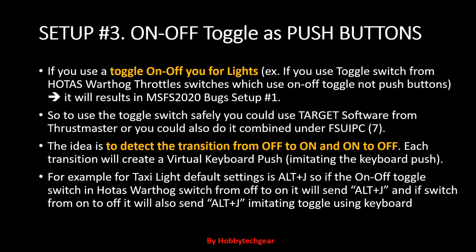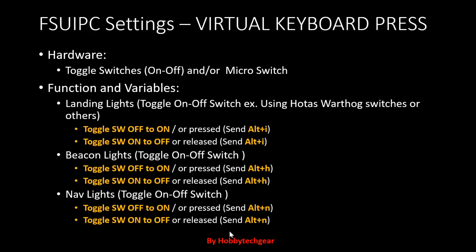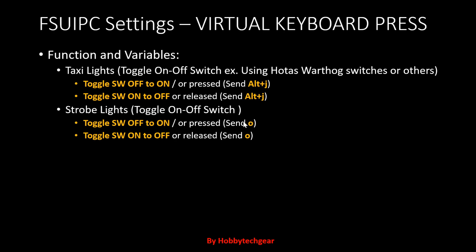The approach is to imitate a keyboard key press to send an on/off toggle. For example, Alt+J for taxi light — pressing Alt+J toggles the switch. I want to simulate that using the on/off button. For landing lights it's Alt+I, for beacon it's Alt+H, for nav light Alt+N, for taxi light Alt+J, and strobe is O. Every time the switch position changes from on to off or off to on, it sends that key press.